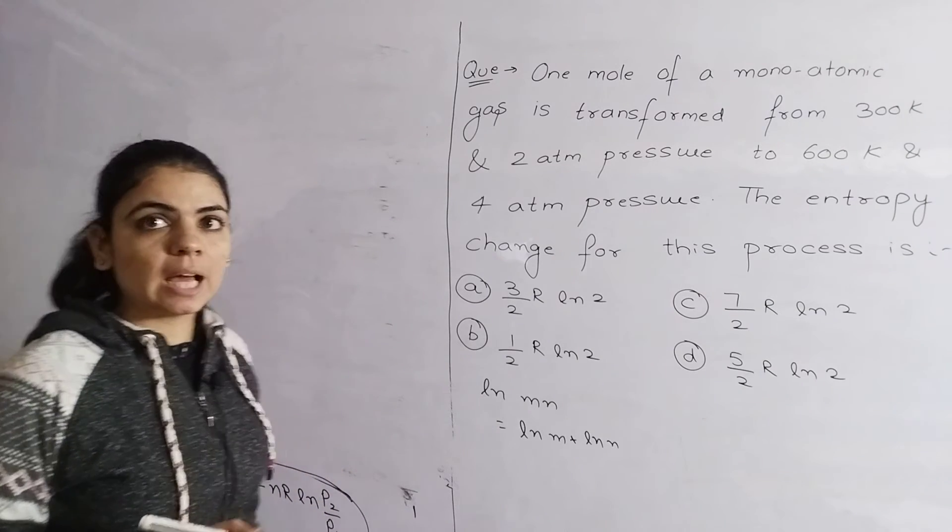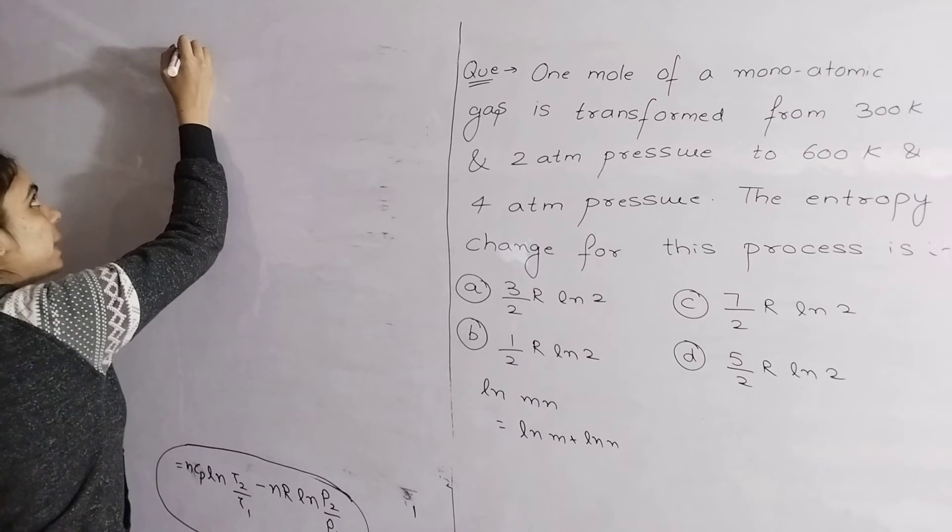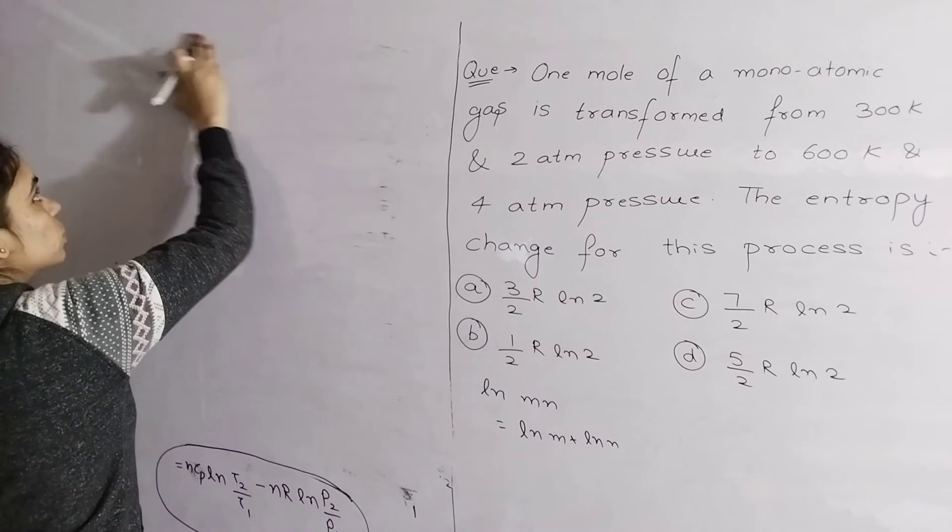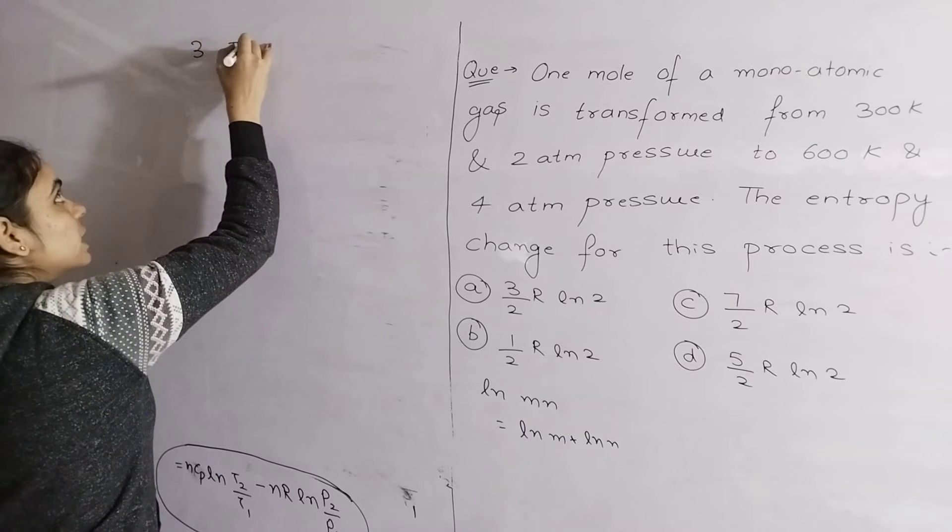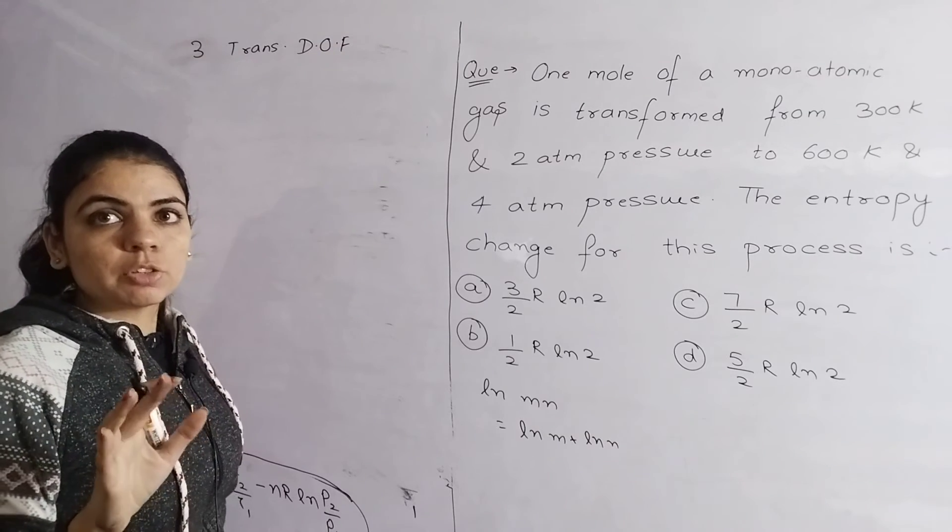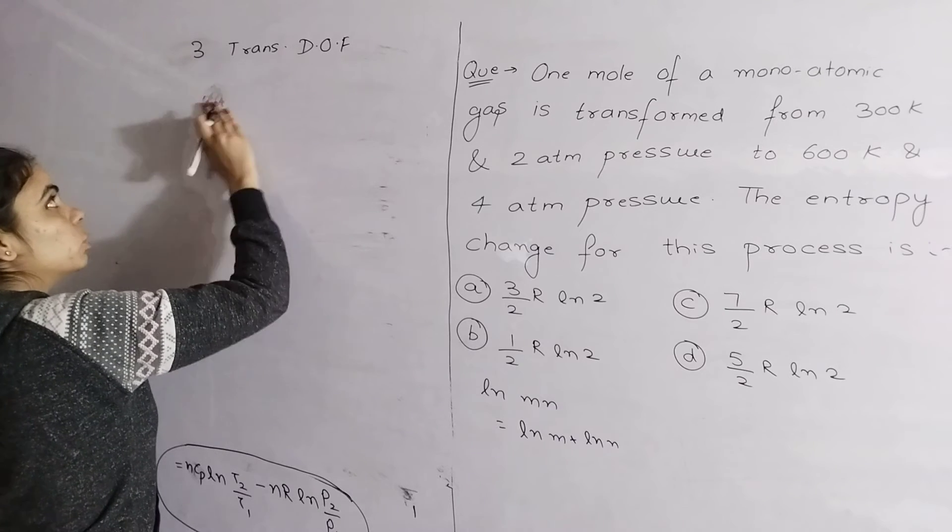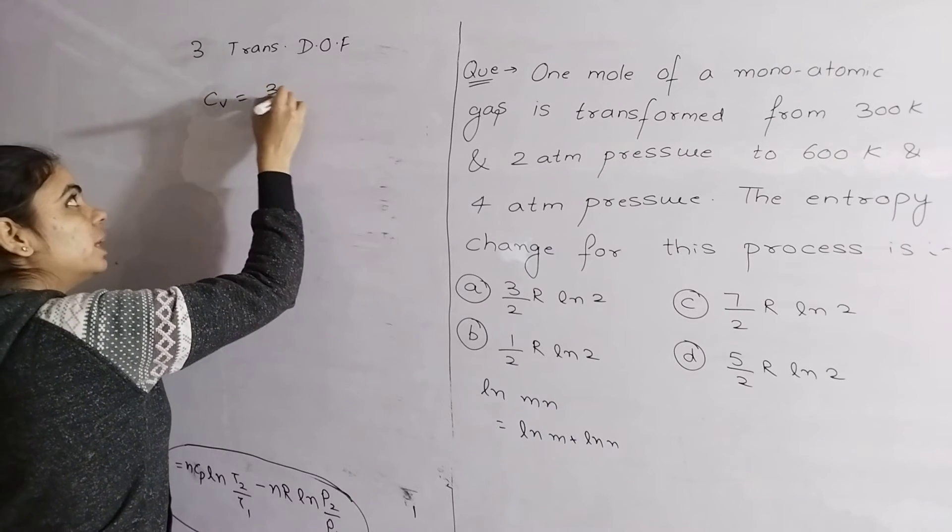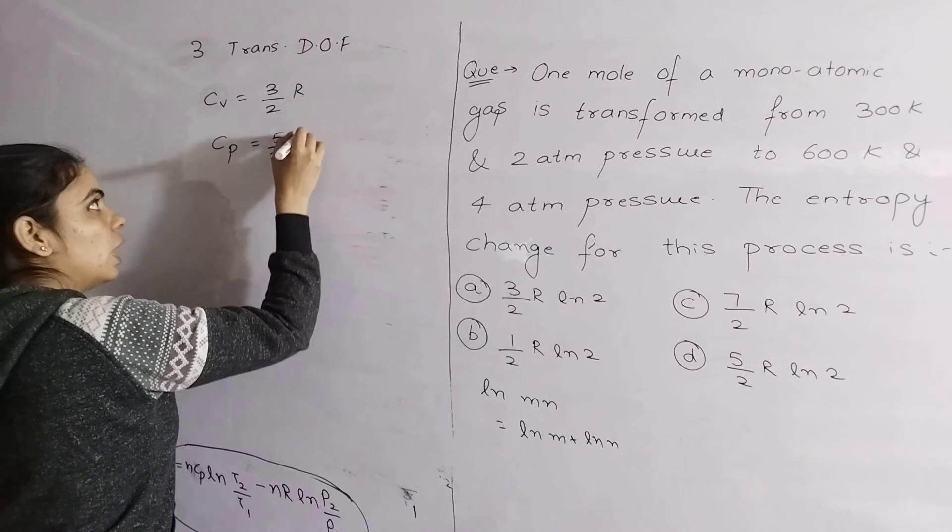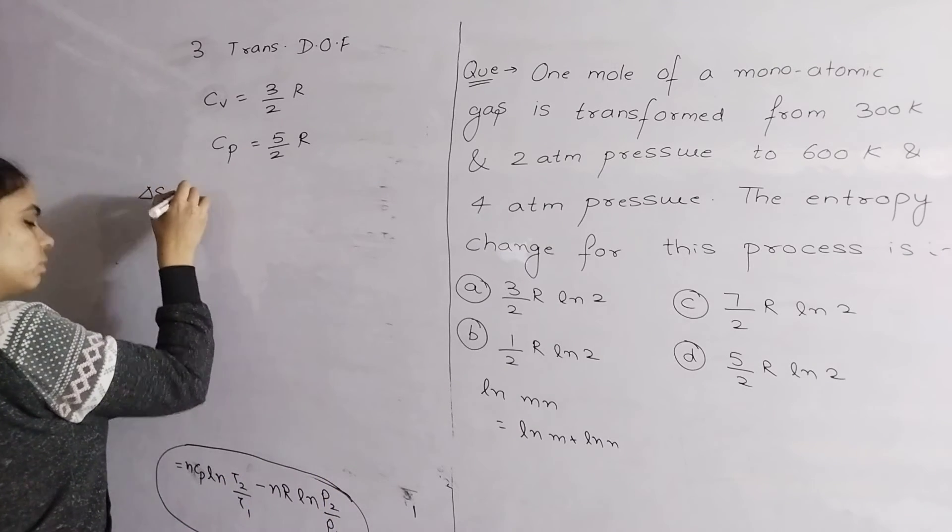How do we find CP for monoatomic gas? Monoatomic gas has only 3 translational degrees of freedom. Every translational degree of freedom contributes 1/2 R. So how much will it be in CV? 3/2 R. But we don't have CV, we need CP. So CP will be equal to 5/2 R.